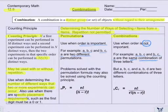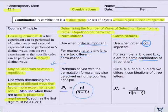Problems solved with the permutation formula can also be solved with the counting principle. The permutation formula is nPr = n factorial over (n minus r) factorial. For combinations, ABC and ABD are two different combinations of three letters. We use nCr, which equals n factorial over r factorial times (n minus r) factorial.